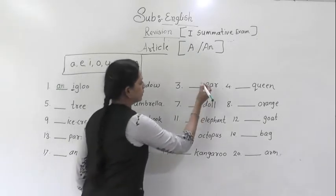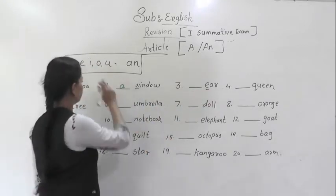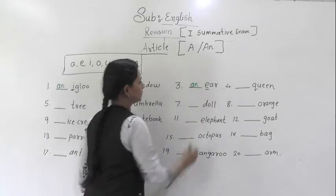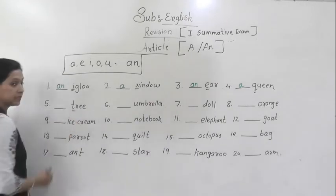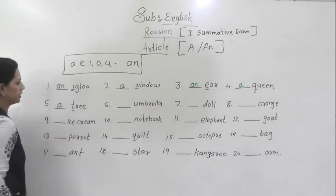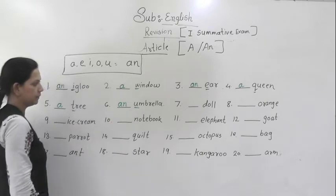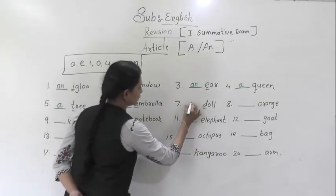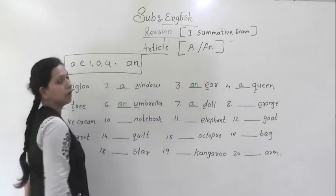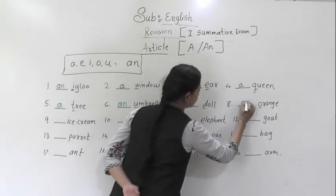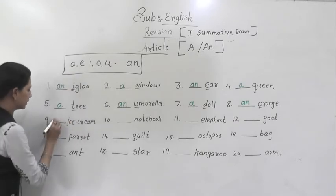Next is number three. Here, you have to see the first letter. E is vowel. You can see here. So, what will come here? An. Then, Q is consonant. So, a queen. Then, T is also consonant. So, right here a tree. Umbrella. U is vowel. So, right here an umbrella. D is consonant. So, right here a doll. O is vowel. So, right here an orange. Next is I. Just here an ice cream.